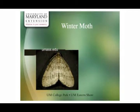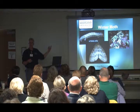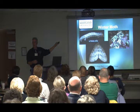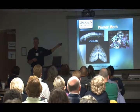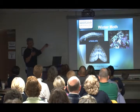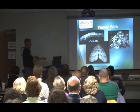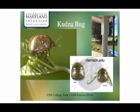Winter moth is in the Boston area and Vancouver — we don't have it yet, but it will eat hardwoods: maples, oaks, elms, all sorts of plants. It gets its name because adults fly in November around Thanksgiving; eggs hatch in spring and chew foliage. Hopefully it won't move down here.